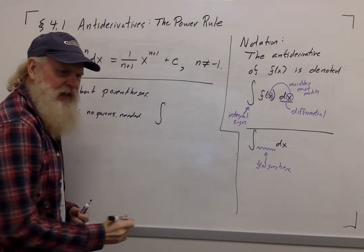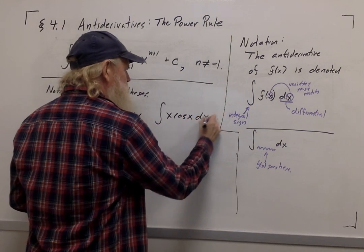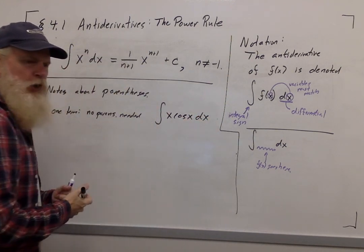For example, we could write the anti-derivative of x cosine x. Only one term in here, no grouping symbols needed.